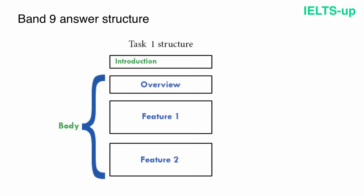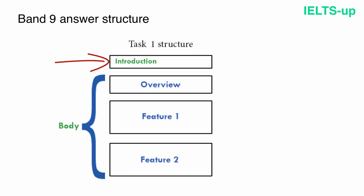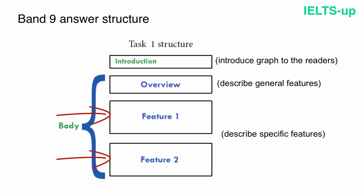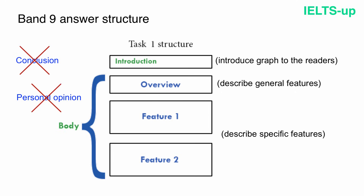Here is the band 9 answer structure described in the previous lesson. If you are answering an IELTS writing task 1 question, you can get a band 9 by following this ideal answer structure. Your first paragraph is an introduction — you should introduce your graph to the reader. Your second paragraph is an overview — there you should describe some general features of your diagram. After writing the overview, you should describe specific features of the diagram, each in a separate paragraph. Never ever write conclusions or a personal opinion in writing task 1 — your task is to describe the given data, not to give your opinion.